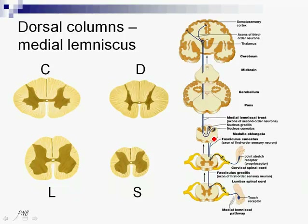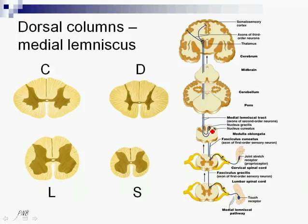As they ascend, they form fasciculi. The more lower fibers — the fibers coming from lower limbs and the lower part of the trunk — form the fasciculus gracilis, whilst the upper fibers coming from upper limbs and the upper part of the trunk form the fasciculus cuneatus. We can see that they finish in the nucleus gracilis, that's the end of the fasciculus gracilis, and nucleus cuneatus at the end of the fasciculus cuneatus.